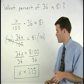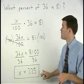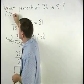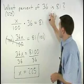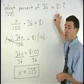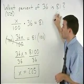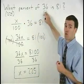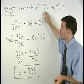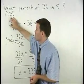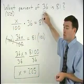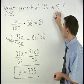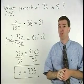Now let's check to see if our answer makes sense. We have 225% of 36 is 81. Well we know that 100% of 36 would be 36, so 225% of 36 should be a lot more than 36. So 81 seems to make sense.